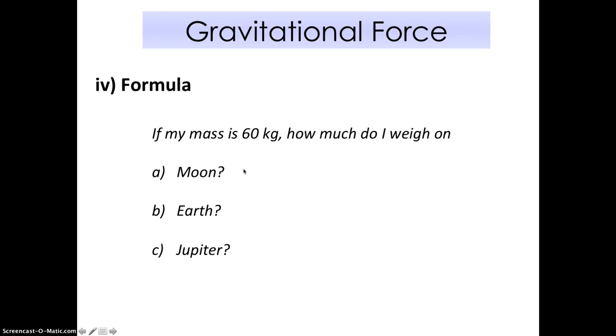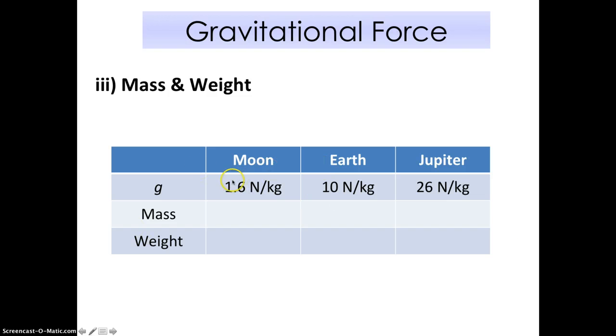Alright. So let's look at what the formula means and what we have been learning so far. So if my mass is 60 kg, how much do I weigh on the moon, on Earth, on Jupiter? I want to take some time to think about it now. Alright. So let's look at the first one. We have this table to help us. So if my mass is 60 kg on Earth, I will get weight 600 Newtons. How do I do that? I take mass 60 times my gravitational field strength, which is 10. 60 times 10 gives me 600. So this is my formula. W equals mass times gravity.